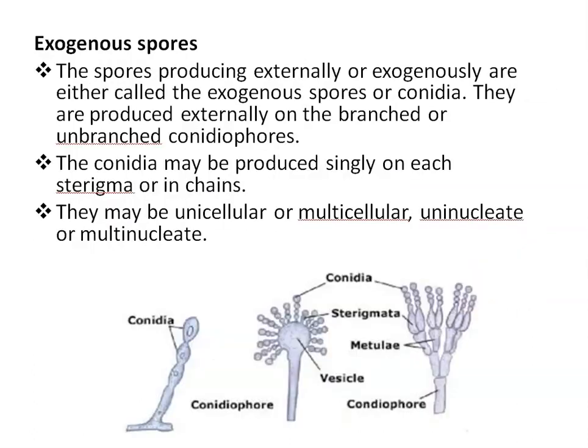Exogenous spores are spores produced externally, also called exogenous spores or conidia. They are produced externally on branched or unbranched conidiophores. Conidiophores are conidia-bearing structures. Conidia may be produced singly or in chains. They may be uninucleate or multinucleate, unicellular or multicellular.